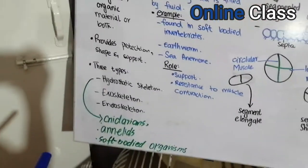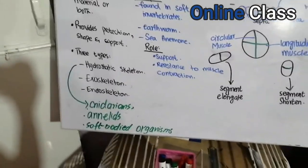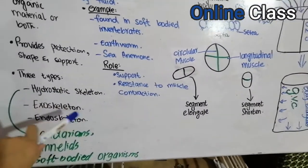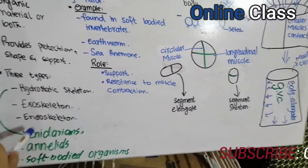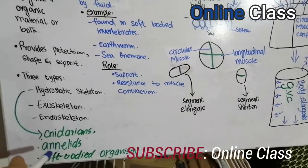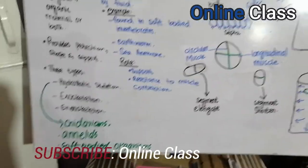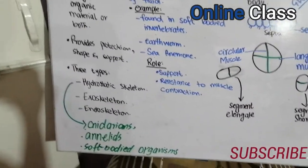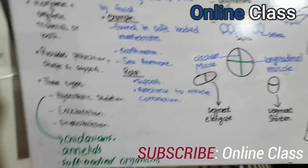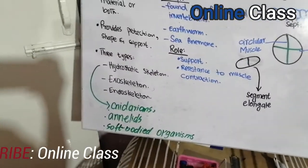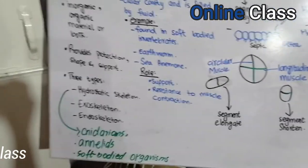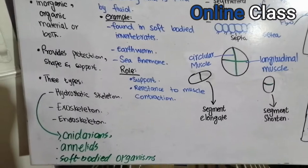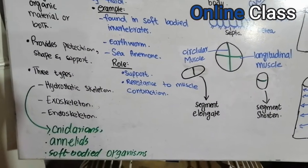There are three types of skeleton: hydrostatic skeleton, exoskeleton, and endoskeleton. In today's lecture, we will see the hydrostatic skeleton — its types and examples — and identify which organisms have a hydrostatic skeleton.